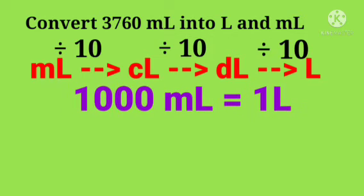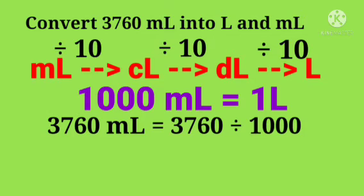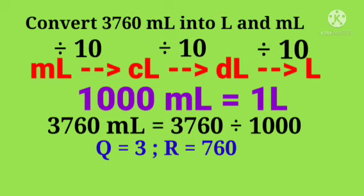As a result, we get 1000 mL is equal to 1 liter. Therefore, 3760 mL is equal to 3760 divide by 1000. Quotient is 3, remainder is 760.